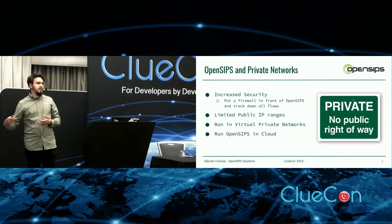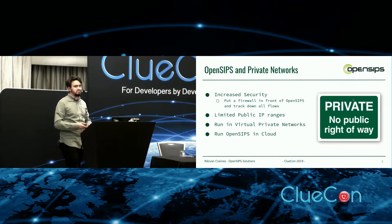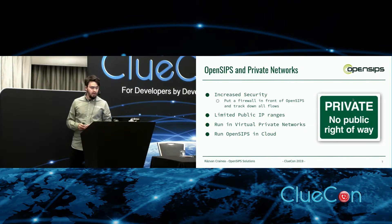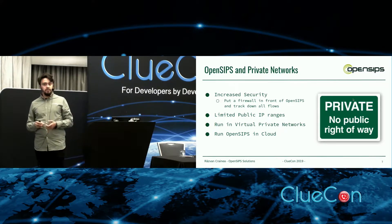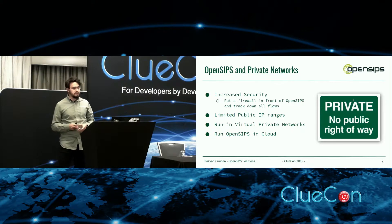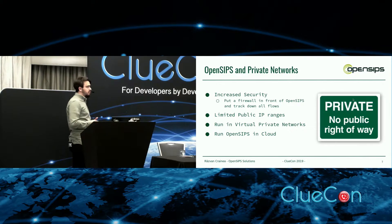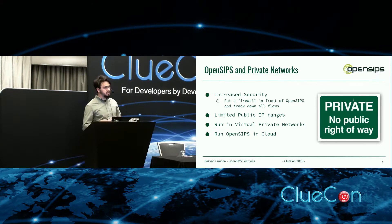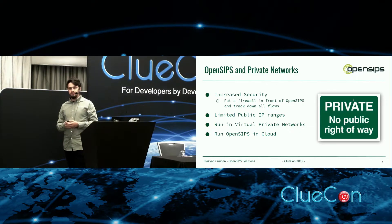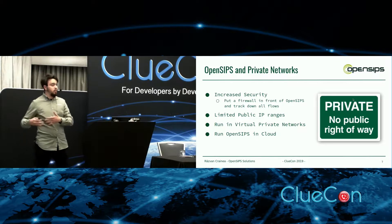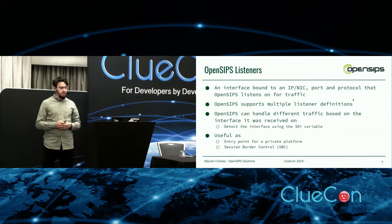If you have, let's say, 10 OpenSips instances, you might not be able to give each instance a public IP. Or you might run it in VPNs — in virtual private networks — or of course in the cloud. All these solutions have different restrictions, and we'll try to categorize them and see how we sort out these restrictions.